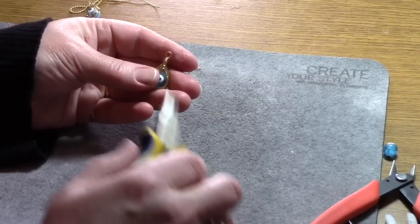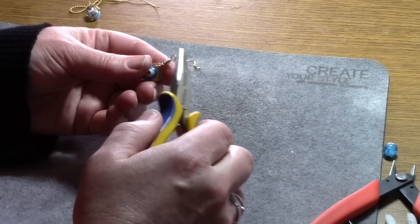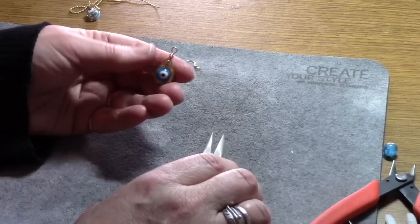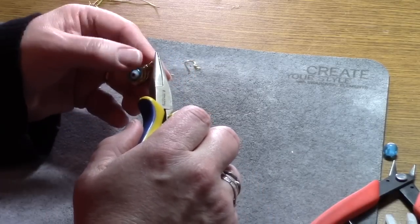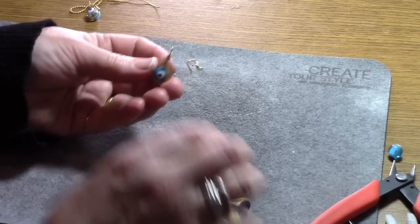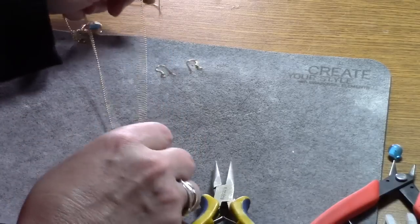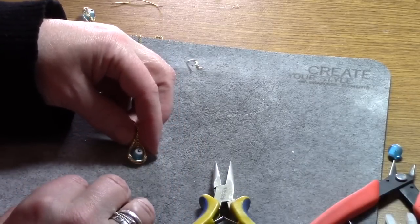Now, if you wanted to use it as a pendant, this would be the circle that you're going to hang it from. Because it wouldn't hang properly the way the circle is, you're just going to take your pliers and just do a really quick twist. And then it will change the position. You would just slide on your necklace, and then that's what you would have.